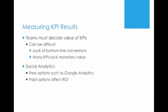Teams need to decide the value of their own key performance indicators, which can be difficult because there is a lack of bottom-line conversions — a team might occasionally post about new merchandise, but that's a small fraction of overall Twitter intentions. Since these lack direct monetary value, teams need to decide what they're trying to get out of these KPIs. They can do this through social analytics — free options like Google Analytics, or paid options like Hootsuite and Adobe Social — but they need to look into how this affects return on investment.